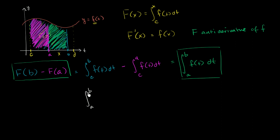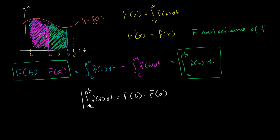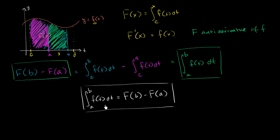The definite integral from a to b of f of t dt is equal to an antiderivative of f — capital F — evaluated at b, minus the antiderivative evaluated at a. This is the second fundamental theorem of calculus, and it's really the core of an integral calculus class because it's how you actually evaluate definite integrals.